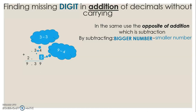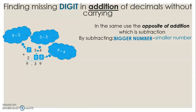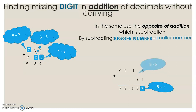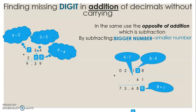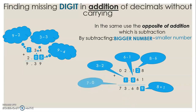3 minus 3 gives us 0. Bigger minus smaller: 9 minus 2 gives us 7. Another example: starting from the last digit, 8 plus 1 gives us 9. Subtract bigger minus smaller: 8 minus 6 gives us 2, 6 minus 1 gives us 5, 3 minus 2 gives us 1, and 7 minus 0 gives us 7.